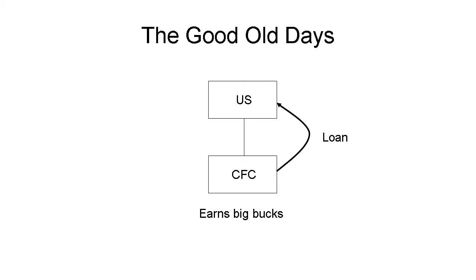The shareholder could get the use of the money and not pay any U.S. tax. As long as there was no formal dividend declared, U.S. tax was deferred. That changed with Section 956.